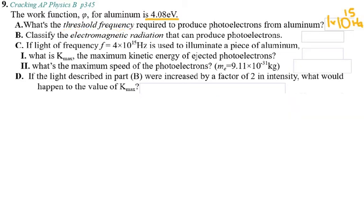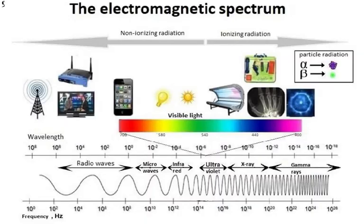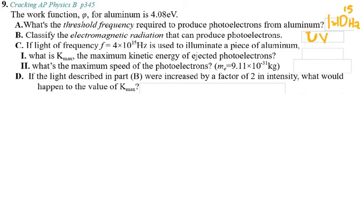For the next part, they ask you to classify the electromagnetic radiation that can produce these photoelectrons. Looking at the chart, 10¹⁵ Hz falls in the ultraviolet range, so this light is somewhere in the UV spectrum.